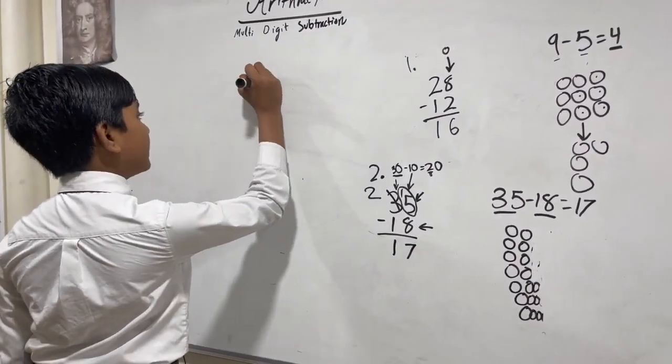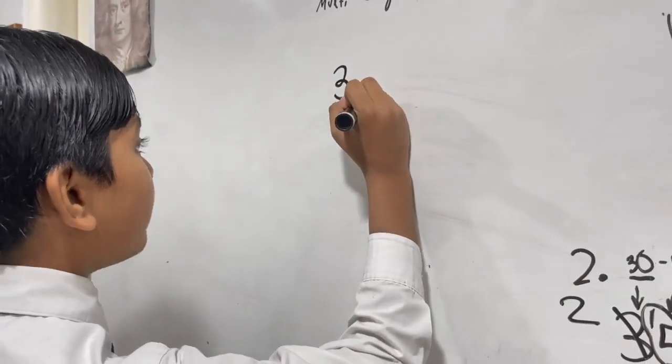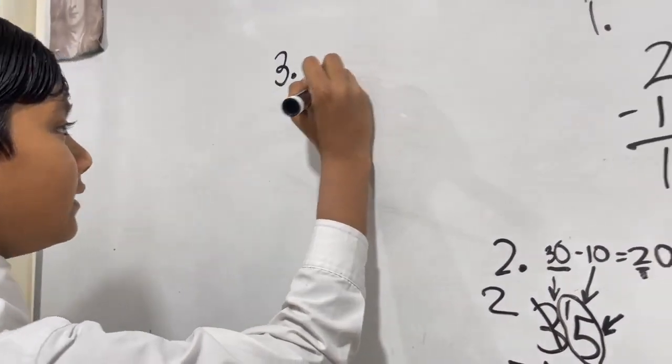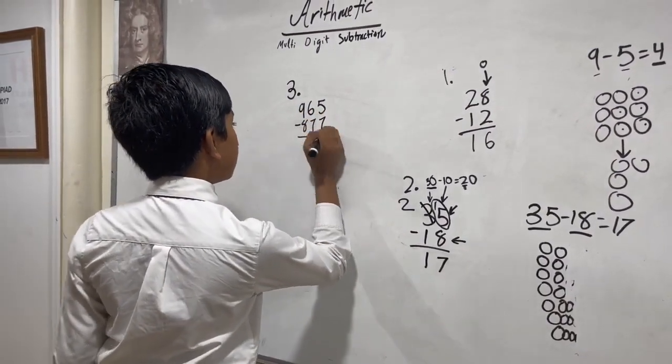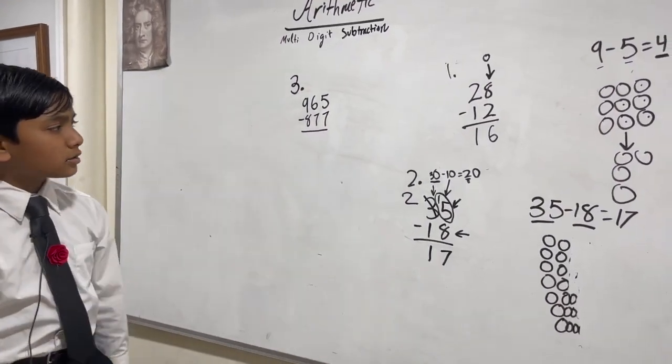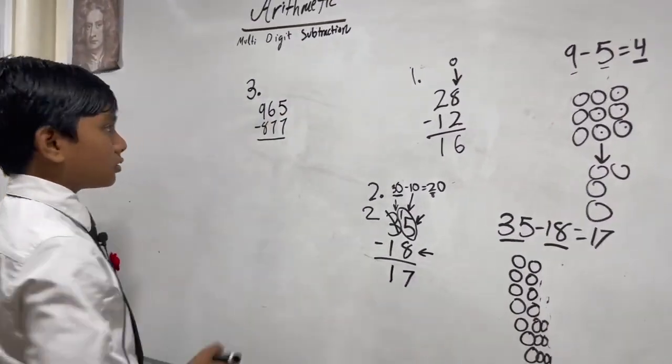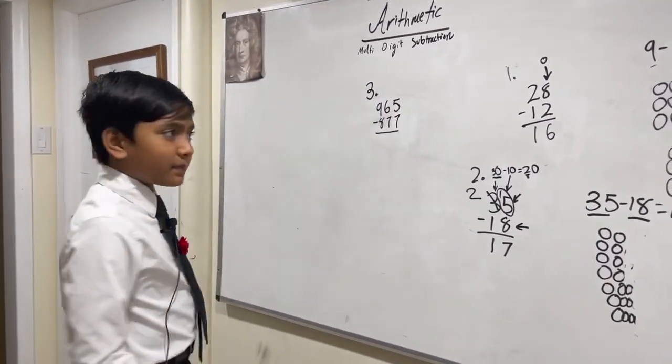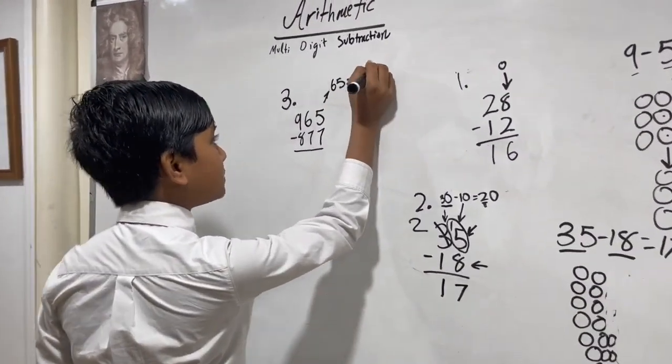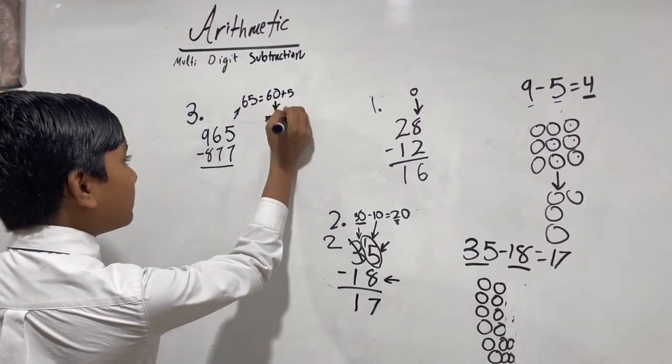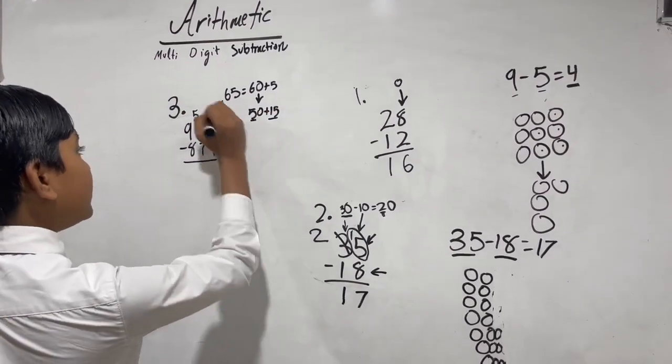Let's try a more complicated one now. For number three, let's say we have 965 and we're subtracting 877. Now obviously the biggest number is stacked on top, but not only is 5 smaller than 7, but 6 is smaller than 7 too. What a dilemma! Here's a reminder that 65 is not only 60 plus 5 but can also be regrouped as 50 plus 15. So this becomes 5 and this becomes 15 because you add 10.